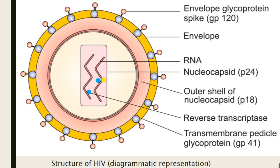Covering the nucleocapsid there is the P18 antigen, which denotes the outer shell of the nucleocapsid. This is an enveloped virus, so it has an enveloped glycoprotein spike that is GP120 and a transmembrane pedicle glycoprotein that is GP41. All these antigens and glycoproteins are important in detection or determination of the HIV viral antigens or antibodies in the sera of infected patients.